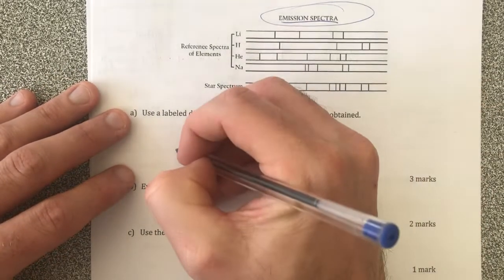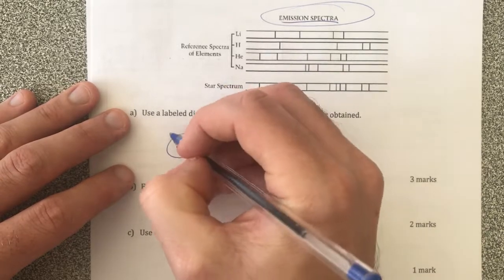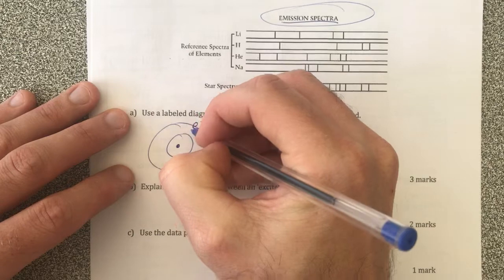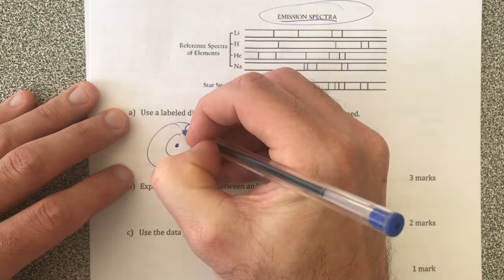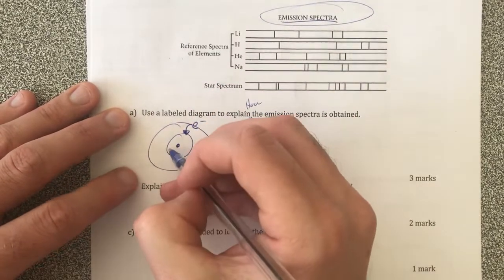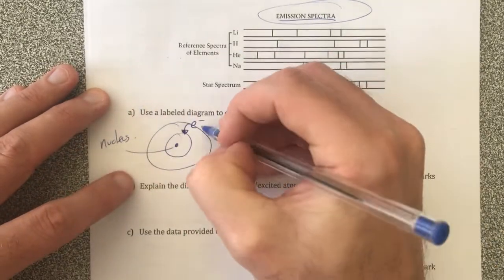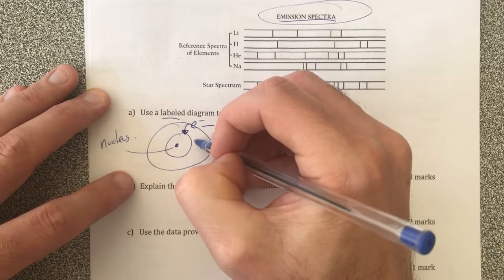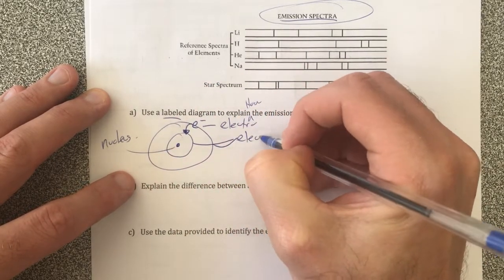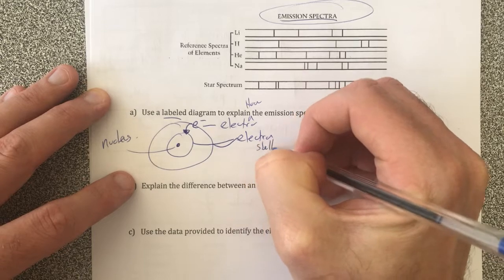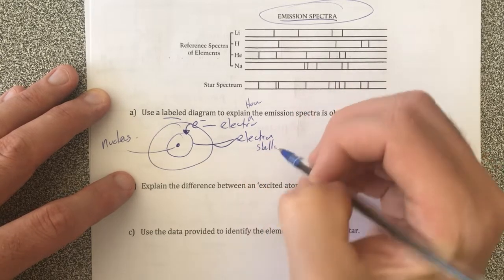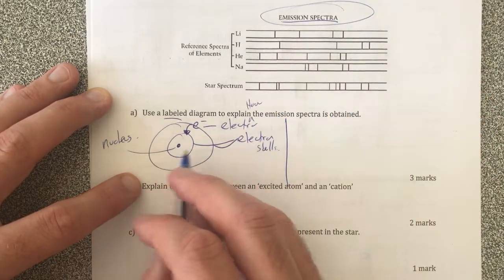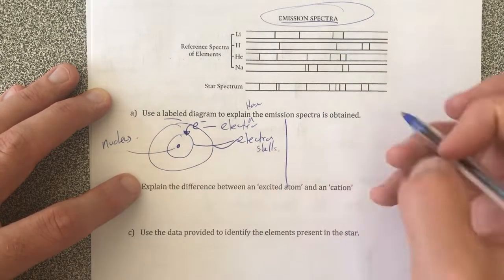A labeled diagram suggests a diagram of an atom, so therefore we have a nucleus, we have electrons, and we have electrons falling back down to a lower energy level. So therefore let's go with this: we have a nucleus, we have an electron, and we have electron shells. This is not a great diagram but it does it at this point.